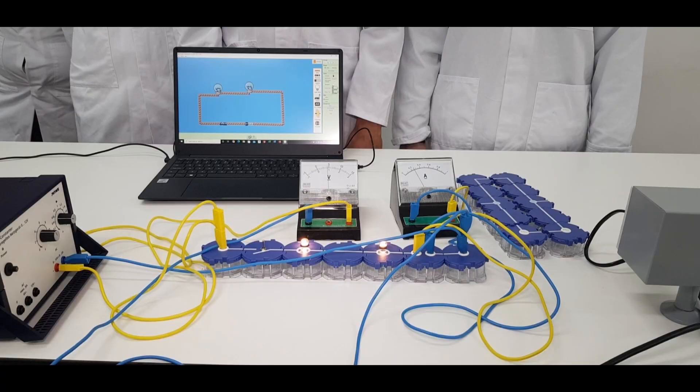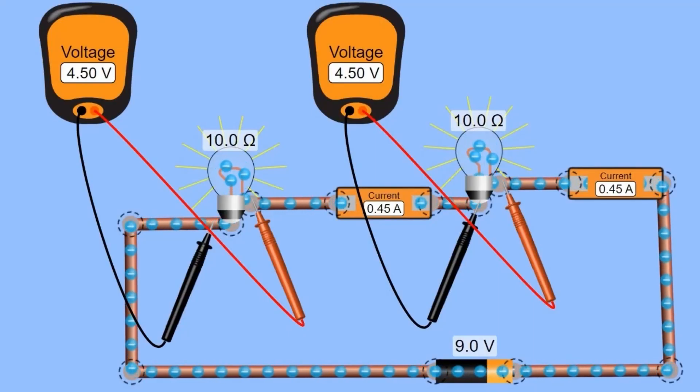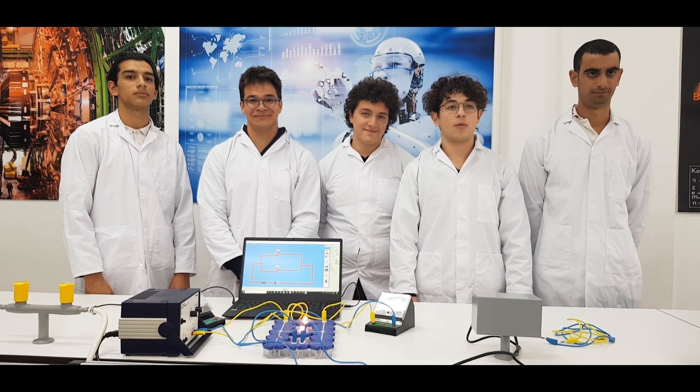Let's summarize the theory. When components such as bulbs are connected in series, the same amount of current flows through all the components. On the other hand, when bulbs are connected in parallel, the current flowing through each component combines to form the current flowing through the source.